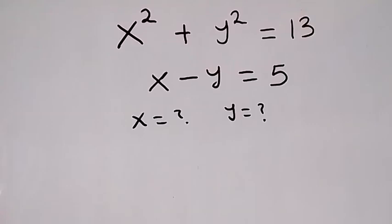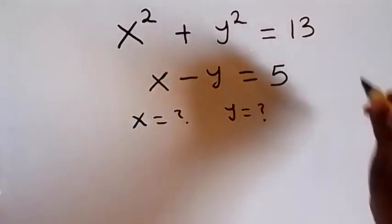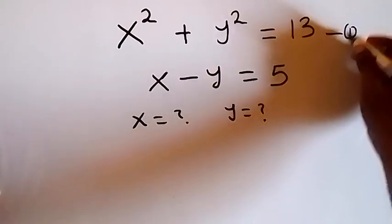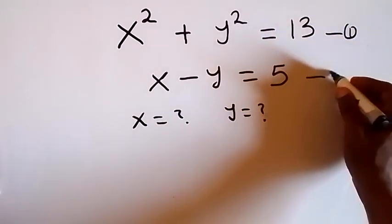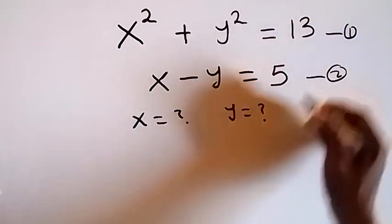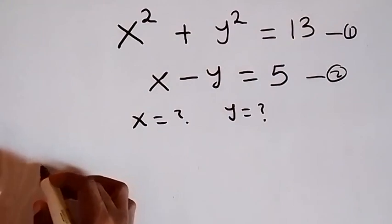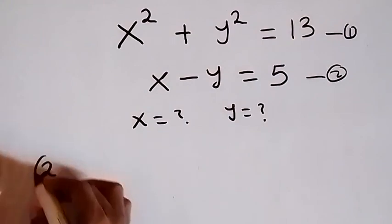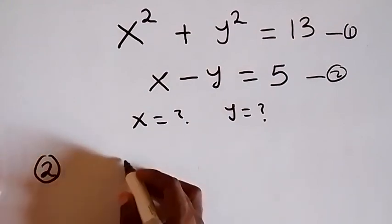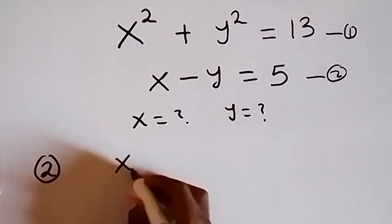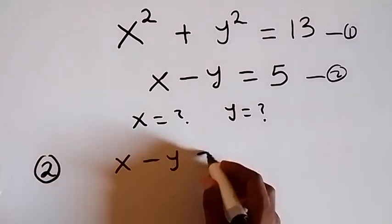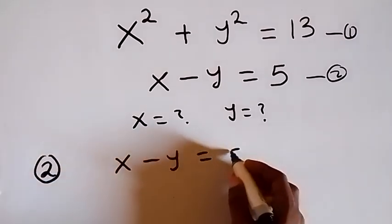Hello, you are welcome. How to solve this nice algebraic equation? Let's call this equation 1 and this is equation 2. Then from equation 2, we have x minus y equals to 5.